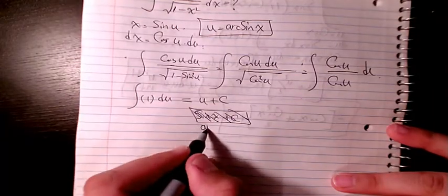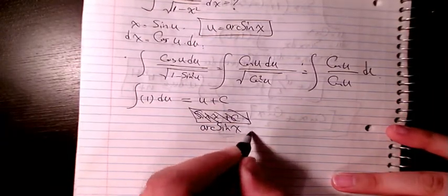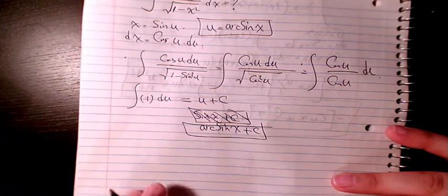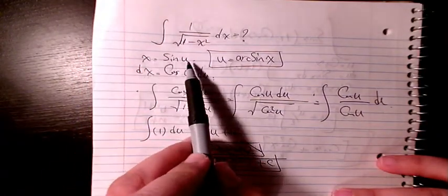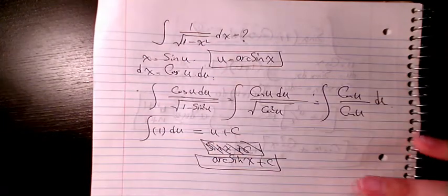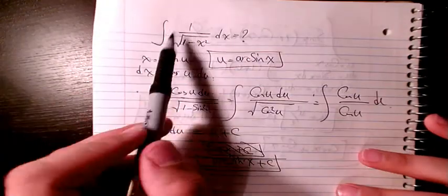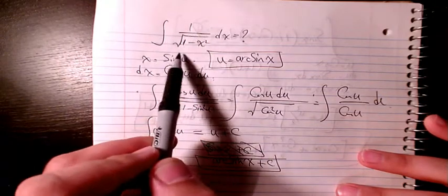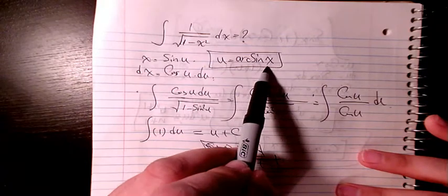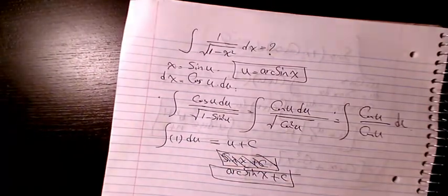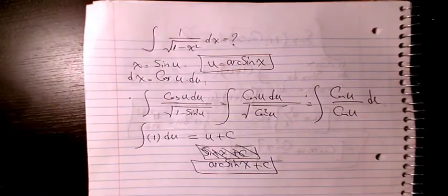x. So here this will be arc sine x plus c. So that will be the right answer because when x is equal to sine u, u will be equal to arc sine x. So we know that integration of 1 over square root of 1 minus x squared dx is arc sine x plus c.